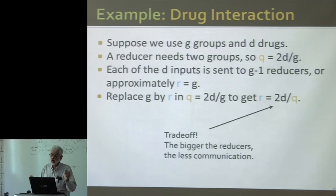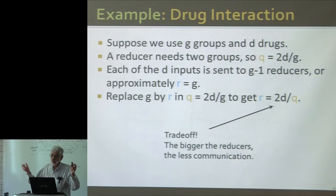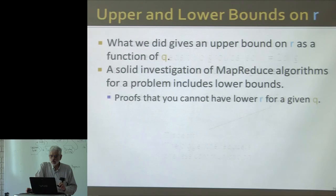So make your reducers as big as possible, but presumably no bigger than what can be handled in main memory without going to secondary storage. I think this is a good point to stop.